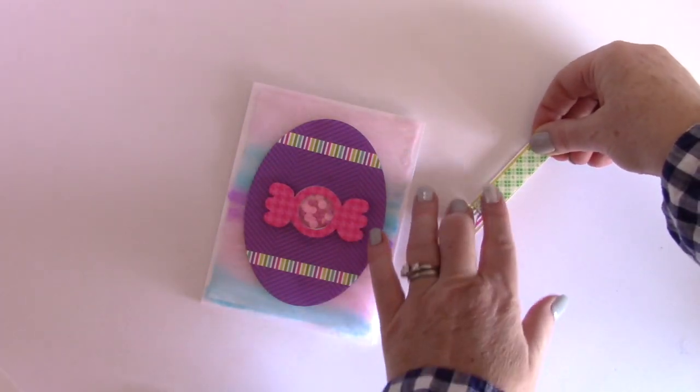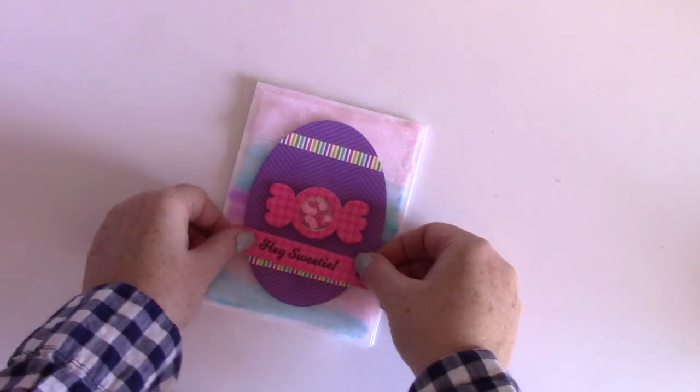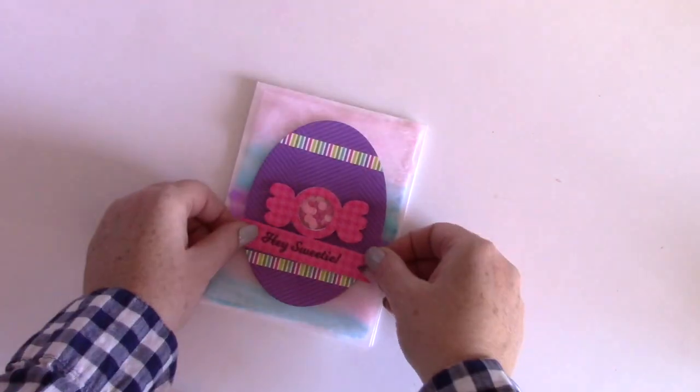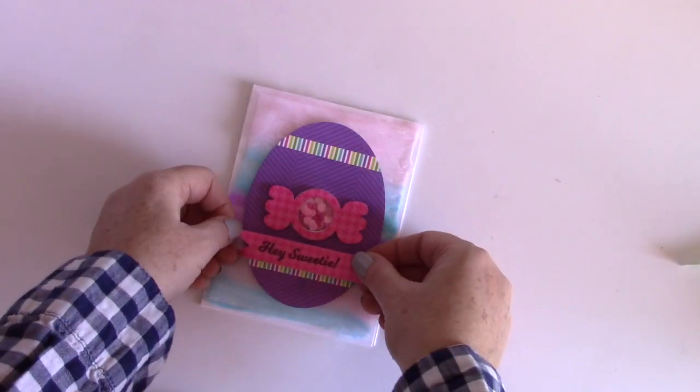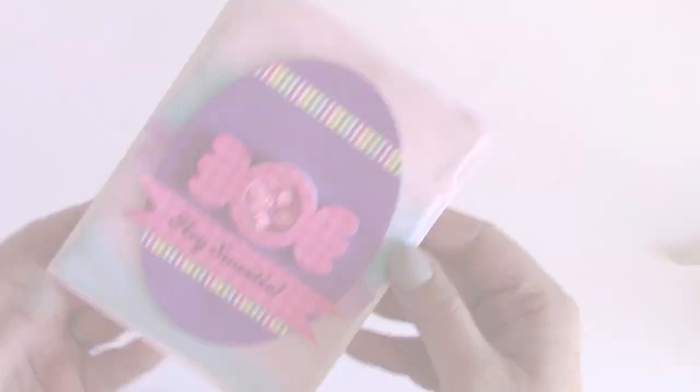And then I'm gonna take my flag sentiment there, my little banner, and I'm gonna pop it up with a little bit of foam adhesive and try and figure out if I want it on the top, on the bottom, where it's gonna go. I think I like it right there underneath the little bit of candy and I like that it's popped up as well.